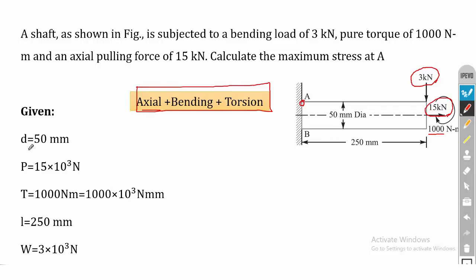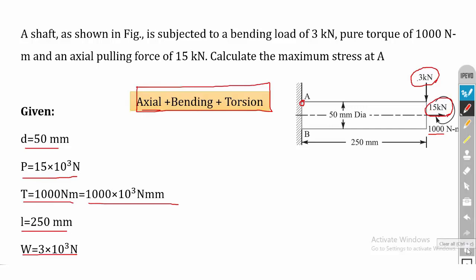The shaft diameter D is 50 mm. The axial load P is 15 kilo Newton, that is 15 into 10³ Newton. The torque T is 1000 Newton meter, converted to 1000 into 10³ Newton mm. The length of the shaft is 250 mm, and the transverse load is 3 kilo Newton, that is 3 into 10³ Newton.